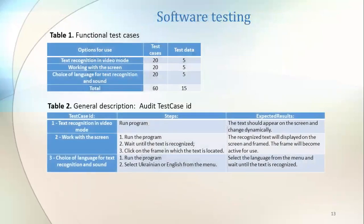To verify the quality and compliance with the requirements specified in the requirement specification, the software is tested. The following test cases and test data sets are created according to Table 1 and Table 2. Table 1 contains functional test cases and Table 2 provides a general description of the test case IDs.